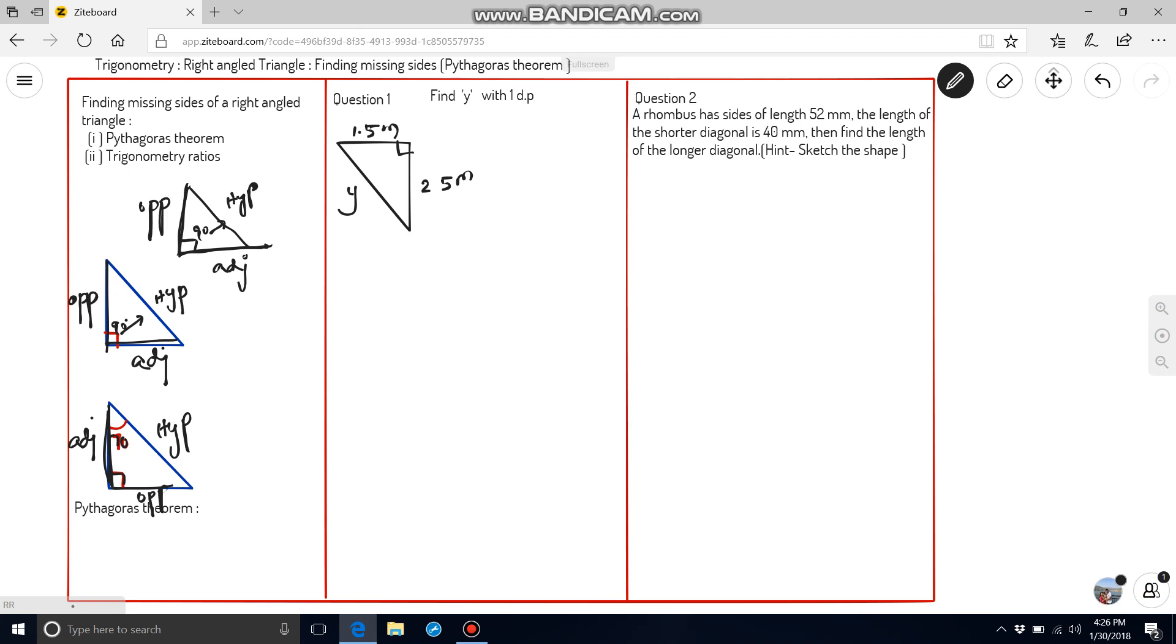In right angle triangle, hypotenuse will be the longest side. Pythagoras theorem says, hypotenuse square is equal to opposite square plus adjacent square. If we need to find out any particular side, we have to square root. Then, we can get the answer.